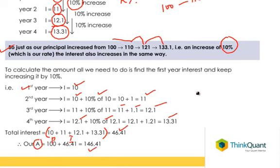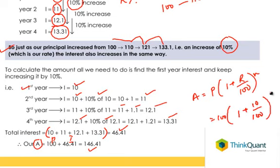The formula would have been A equals P into 1 plus r by 100 to the power n. So our principal is 100, and then our rate is 10 by 100 to the power 4.